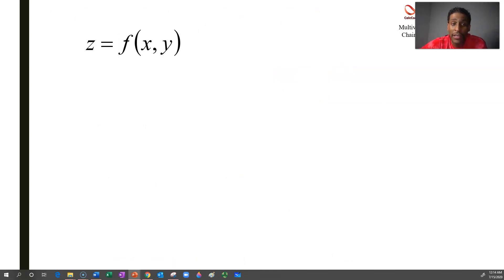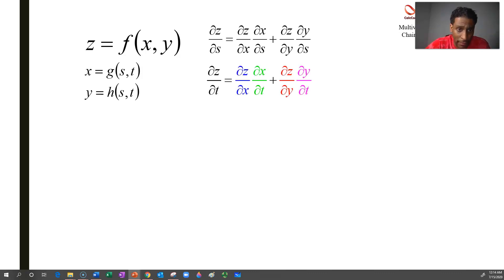So remember now, z is a function of x and y, but now x and y are going to be functions of two variables. Call them s and t. So now you can actually replace all the x's with the g formula, and all the y's with the h formula. And that would make z officially still multivariable, but not of x and y. It'll be multivariable of s and t. So z has a partial with respect to s, but z also has a partial with respect to t. In this particular example question, I'm going to look at the partial with respect to t.